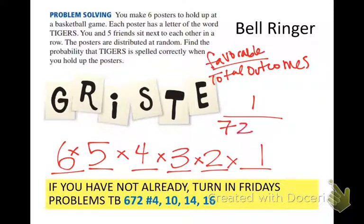720. That is how many ways you can use the letters G-R-I-S-T-E, because G-R-I-S-T-E spells tigers when you do T-I-G-E-R-S, obviously. There are six posters.